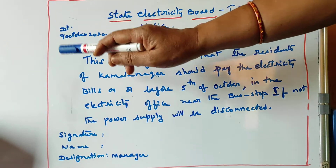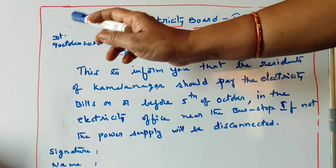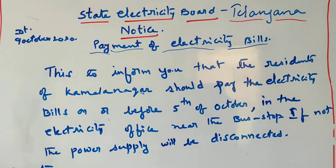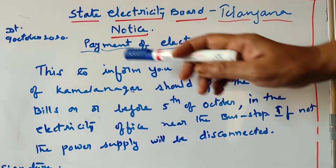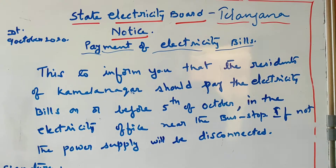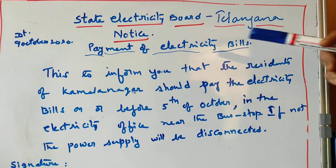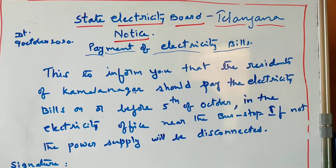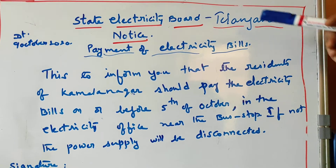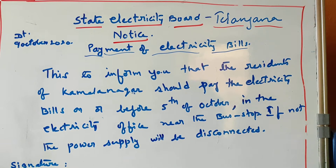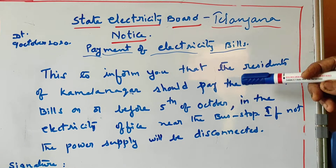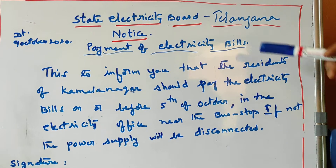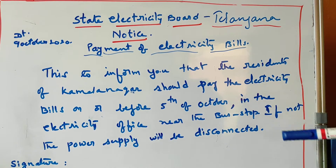The date is very compulsory. The date goes on the left side of the notice — that is the correct way. So this is the example notice.